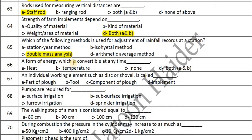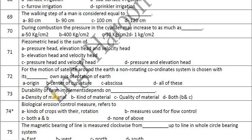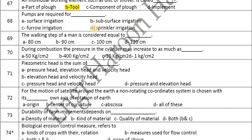A form of energy which is convertible at any time is called heat energy. The individual working elements such as a disc or shovel are called a tool. Pumps are required for sprinkler irrigation. The working step of a man is considered equal to 80 cm.